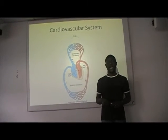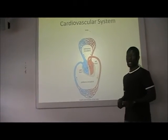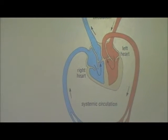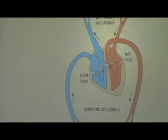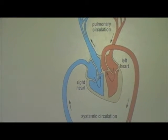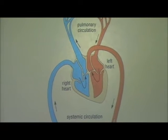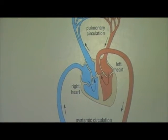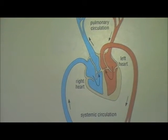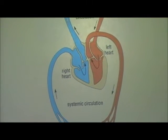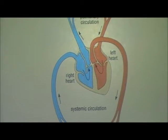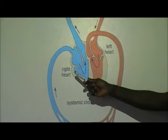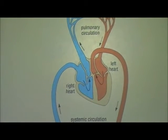To start with, the heart is actually a four-chambered structure. The two chambers at the top of the heart are called atria, which is the plural for atrium — just as stadia is the plural for stadium. So we've got two atria: the right atrium and the left atrium. And for the lower part of the heart, we've got the ventricles: the right ventricle and the left ventricle.